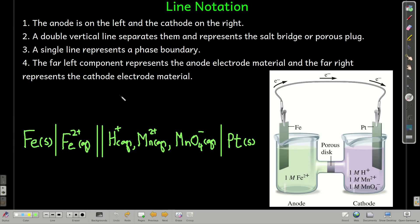Line notation is just a shorthand way of describing a galvanic cell. The convention is that the anode is always on the left where oxidation occurs, and the cathode is on the right. We use a double vertical line to separate the anode from the cathode, which represents whatever allows the ions to travel between the two half cells, a porous plug or a salt bridge usually. Single lines represent a phase boundary, solid, liquid, usually something like that, maybe gas.